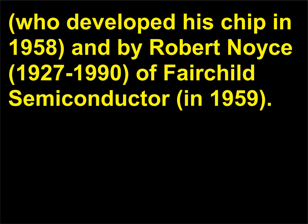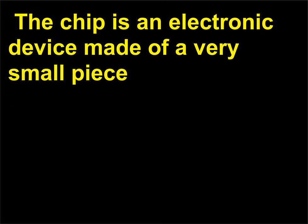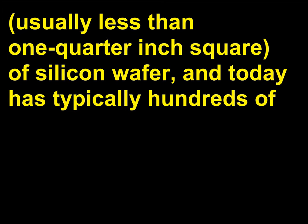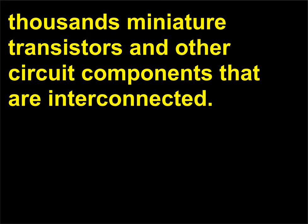developed his chip in 1958, and by Robert Noyce, 1927–1990, of Fairchild Semiconductor, in 1959. The chip is an electronic device made of a very small piece, usually less than one quarter inch square, of silicon wafer, and today has typically hundreds of thousands of miniature transistors and other circuit components that are interconnected.